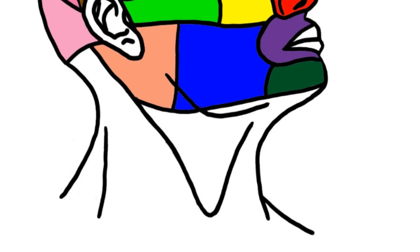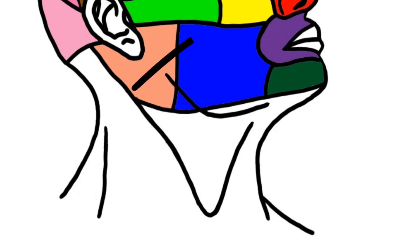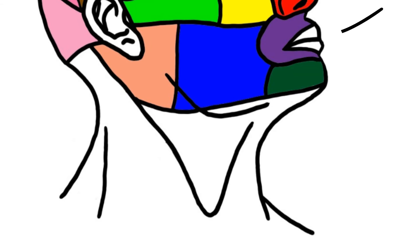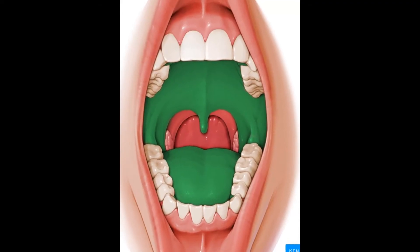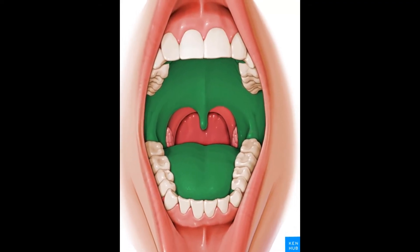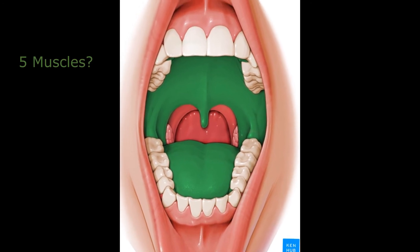For the blood supply you have the facial artery and the maxillary artery. You can have branches including the inferior alveolar arteries, the labial arteries — superior and inferior — the mental artery, etc. For the palate you can have the greater and lesser palatine arteries.